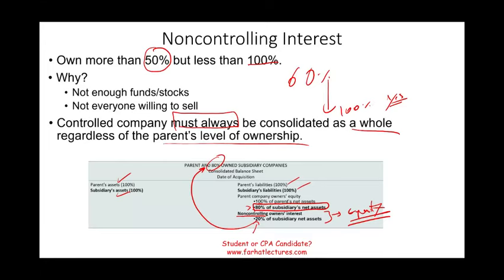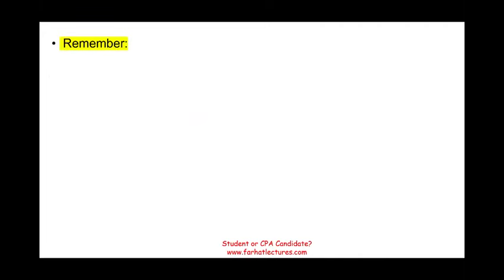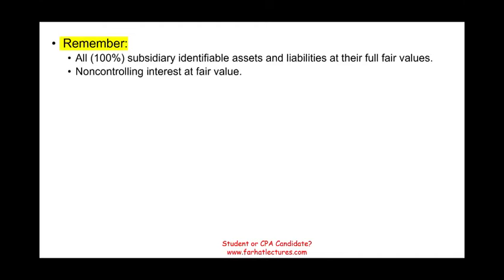All we need to learn in this session is: what is non-controlling interest, and how do we compute it? Remember: 100% of the assets and liabilities are listed on the balance sheet. Non-controlling interest is computed at fair value. And if we have goodwill, we record it — or if we have a bargain purchase, we recognize a gain.